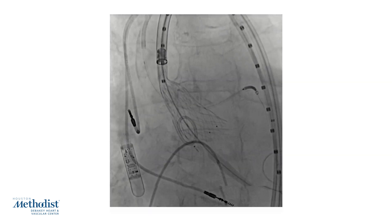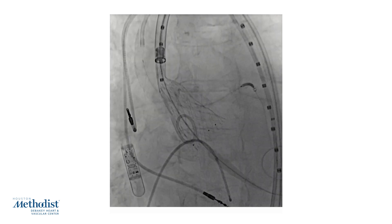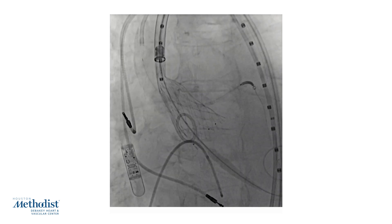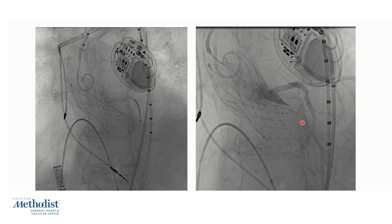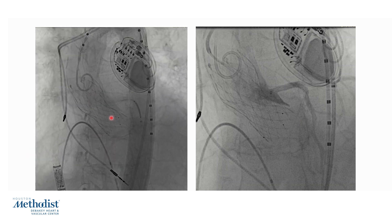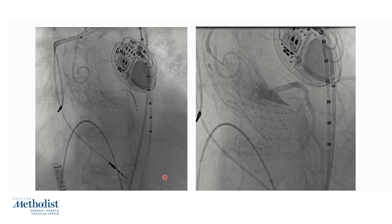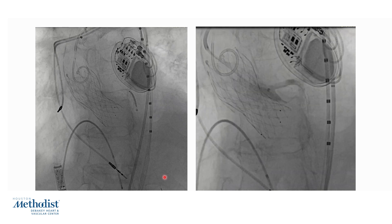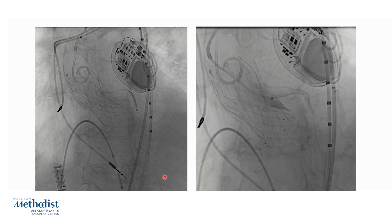We switch the C-arm gantry to the LAO view, and again at 80% deployment there is good positioning, good depth, three millimeters on the left coronary side, and good flow in the coronary artery with the guideliner and the stent parked in the proximal LAD. Subsequently, the valve is deployed uneventfully. The final aortic root angiogram shows excellent positioning of the valve, no aortic regurgitation, and good coronary flow. The stent is not needed and is retrieved back into the guideliner. By placing the guideliner tip just outside the left coronary ostium, we do an angiogram demonstrating good flow in the left coronary without any evidence of coronary compromise.